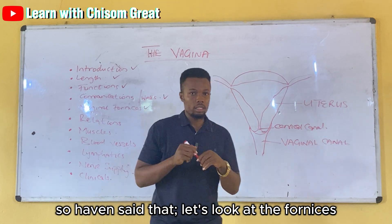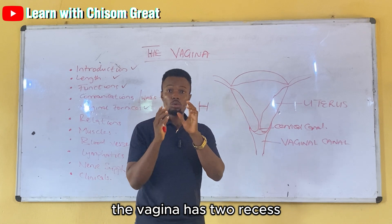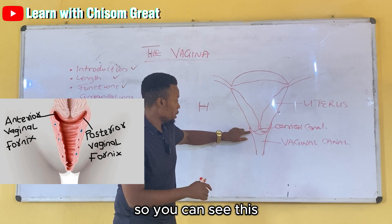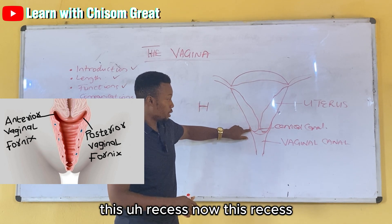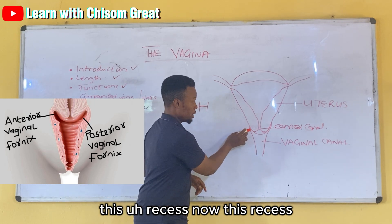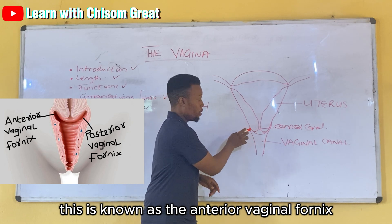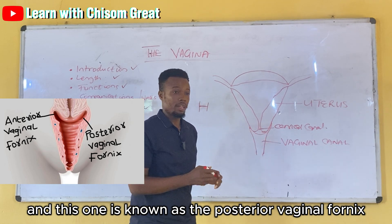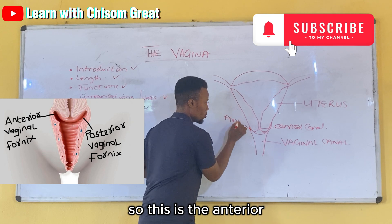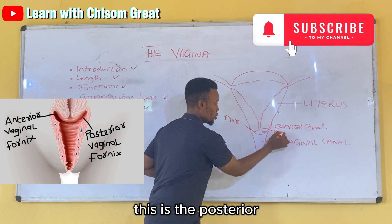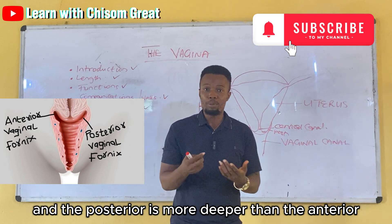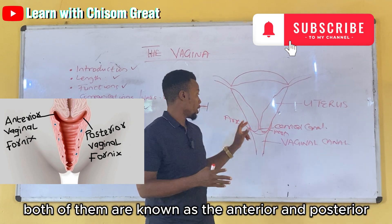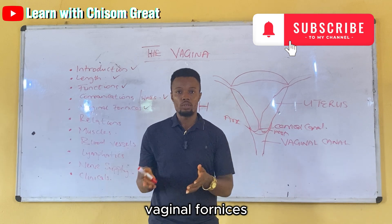The vagina has two recesses: the anterior and the posterior vaginal fornices. The posterior fornix is deeper than the anterior vaginal fornix. Both of them are known as the anterior and posterior vaginal fornices.